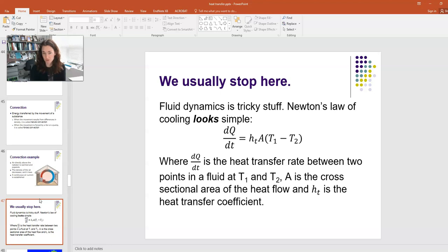And it looks really simple, right? So here, this dQ/dt is the rate of heat transfer. Remember, we use Q for heat, and then this is the time derivative of the heat energy transfer, dQ/dt. And then that's equal to the heat transfer coefficient, h sub t, times the cross-sectional area through which the heat is being transferred, A, times the temperature gradient, delta t, or T1 minus T2. So, this looks like a pretty straightforward, easy-to-handle equation, doesn't it?